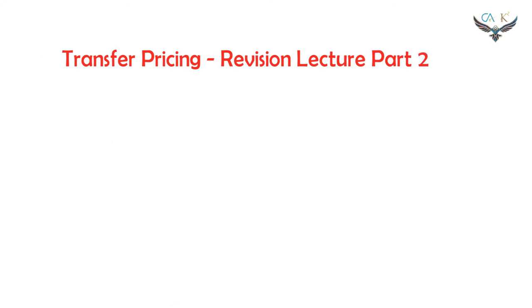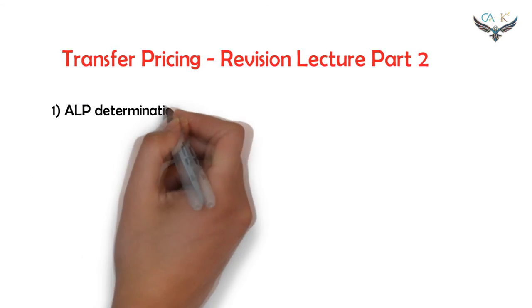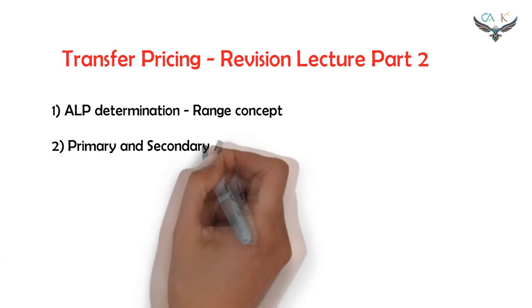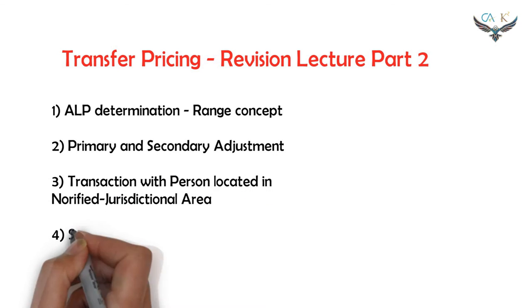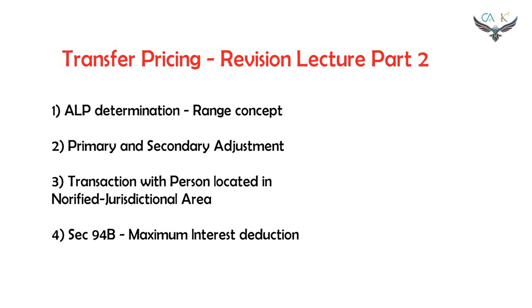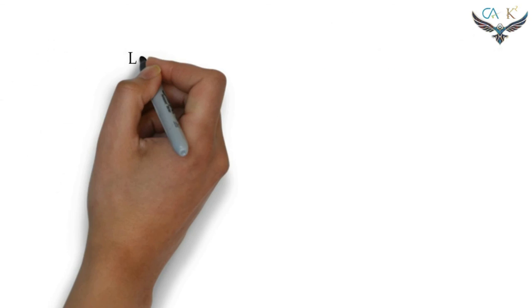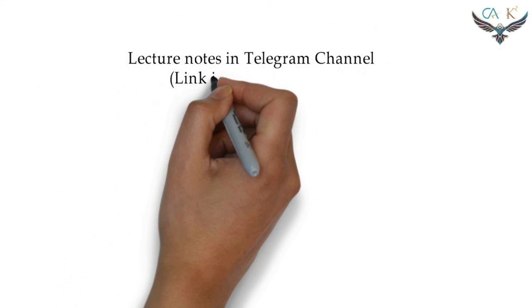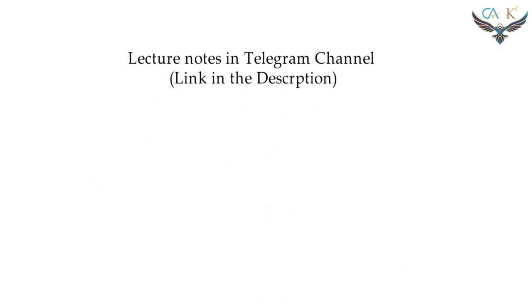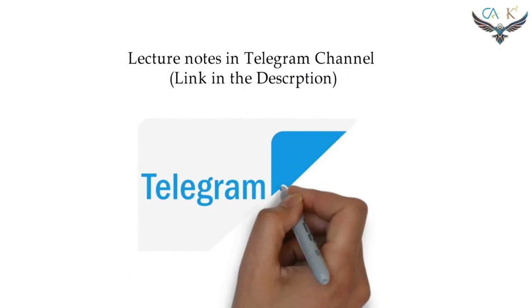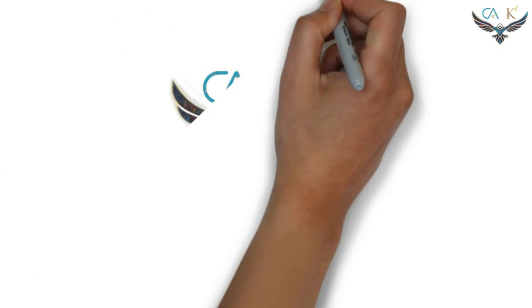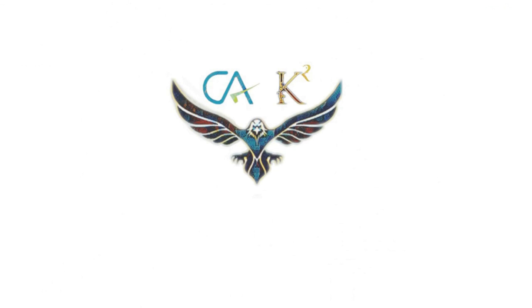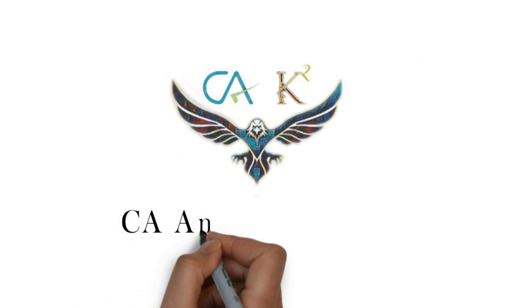The range concept in arm's length price determination, the primary and secondary adjustment, the transaction with persons located in notified jurisdictional areas, and Section 94B on the maximum interest deduction will be discussed in the transfer pricing revision lecture Part 2. If you want to download today's lecture in PDF form, you can download it from our Telegram channel — the link is given in the description. We will see you in the next lecture video.